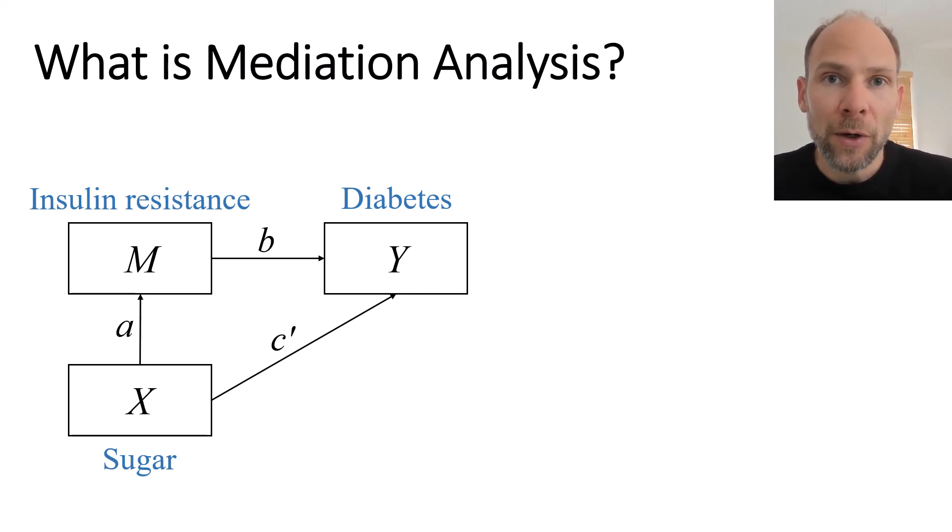For that we have to look at some equations to understand what this model implies mathematically. So mathematically you can think of this model as a multivariate regression analysis that has a regression equation for each dependent variable in the model. In this model we have two dependent variables M and Y.